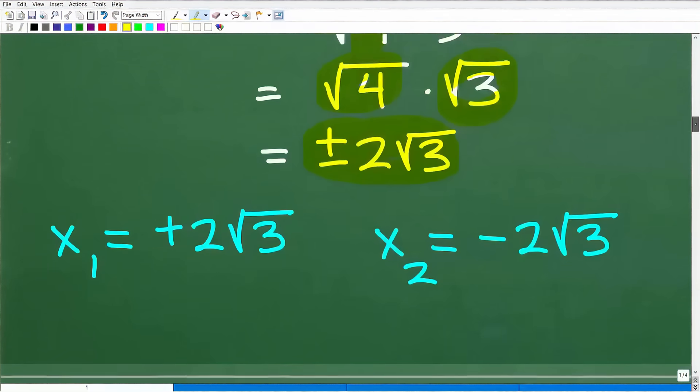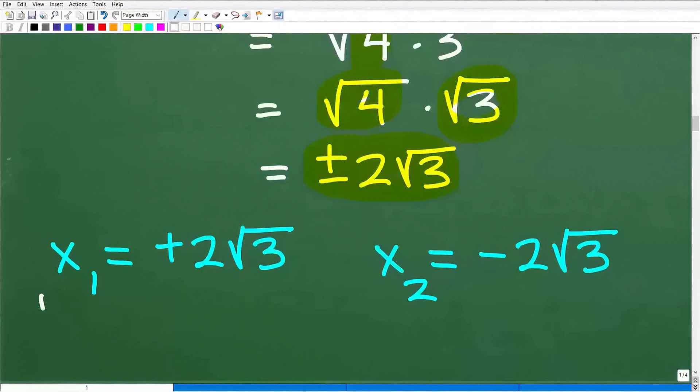And again, these are two distinct, unique solutions. Our first solution would be positive 2 times the square root of 3, and our second solution would be negative 2 times the square root of 3.